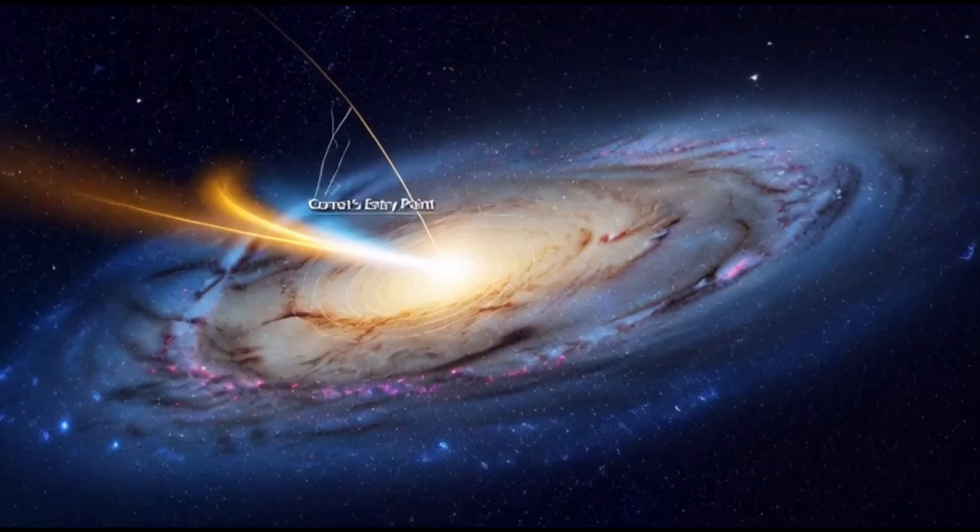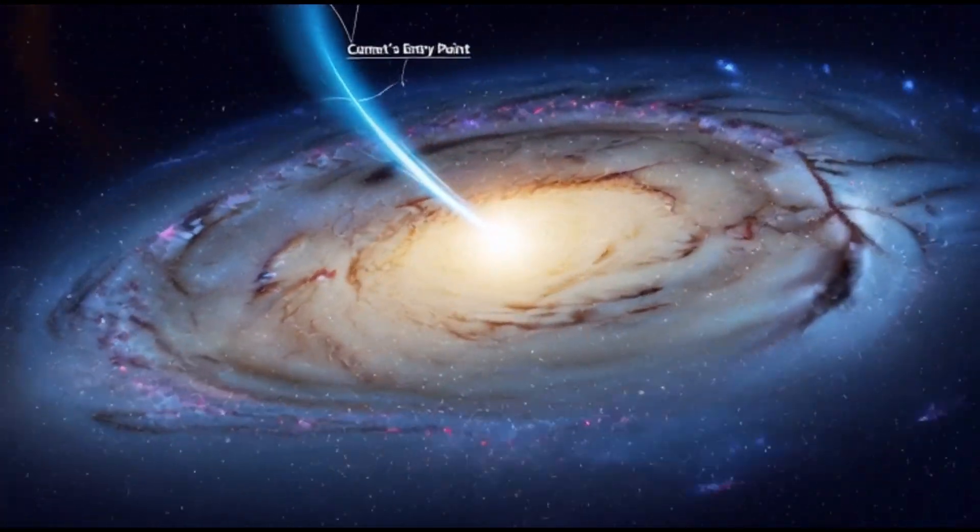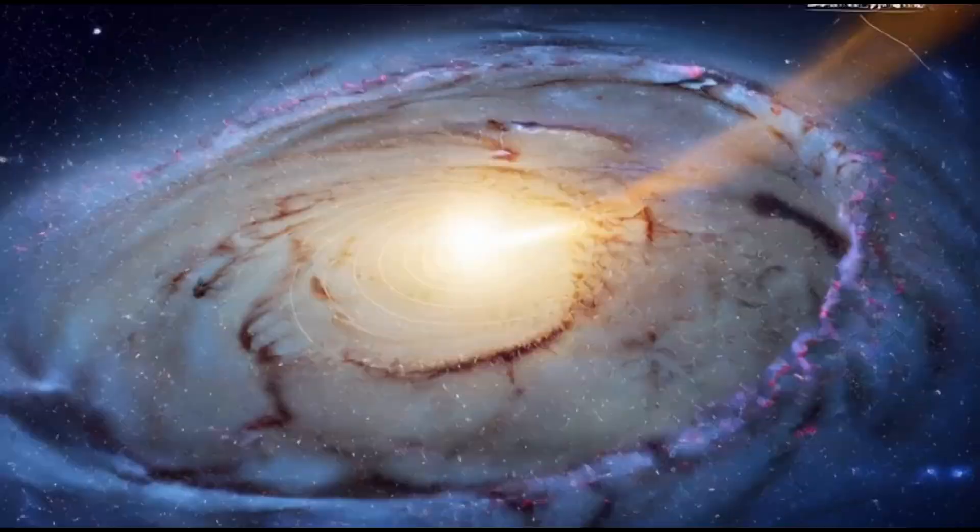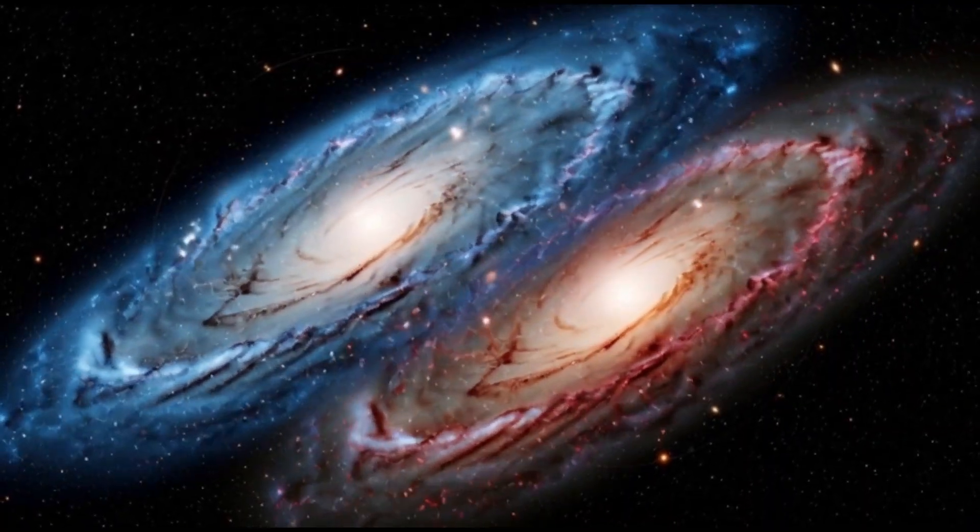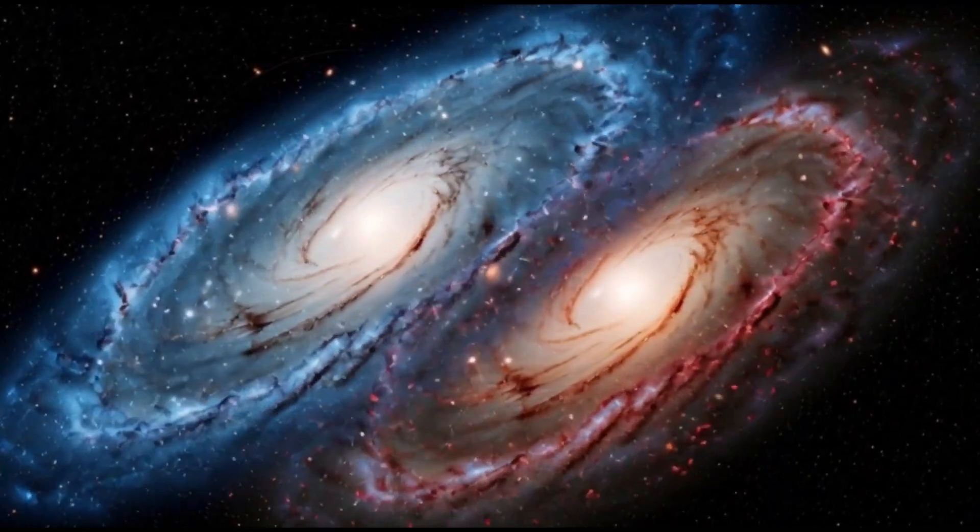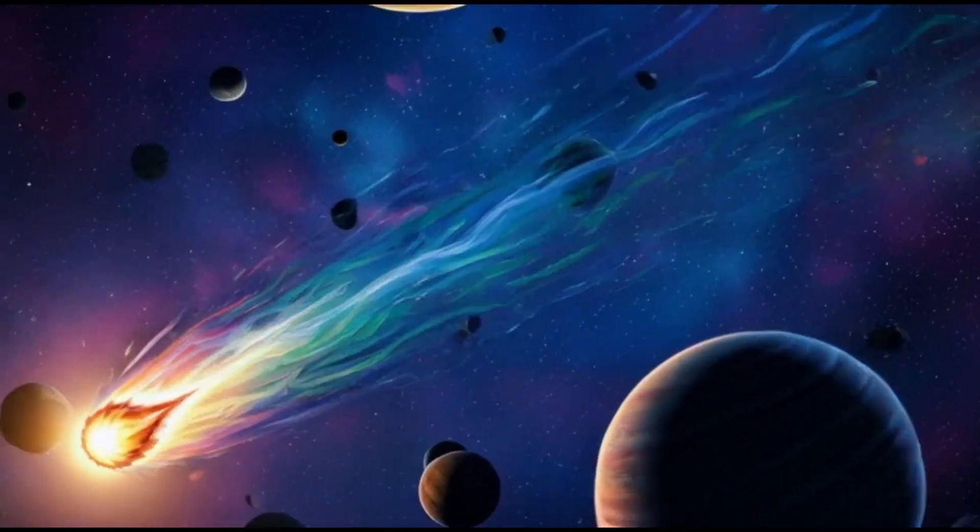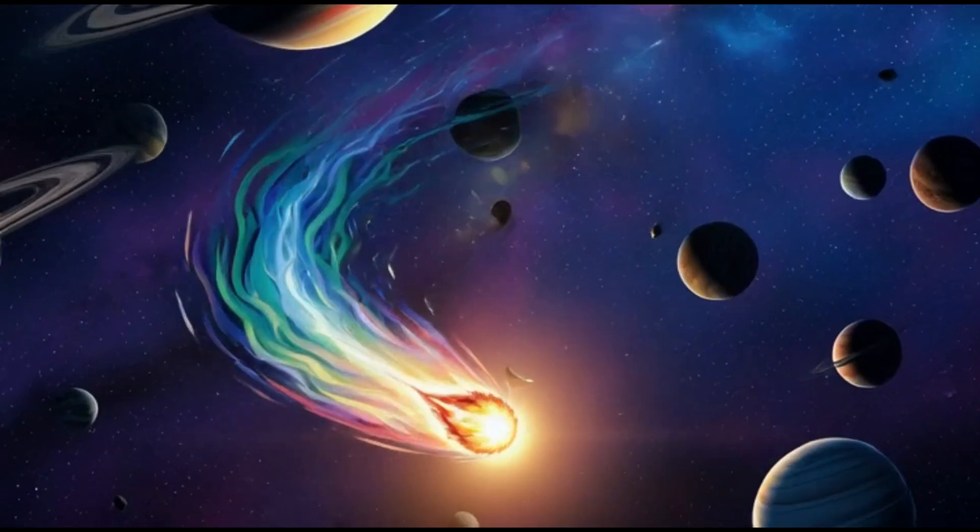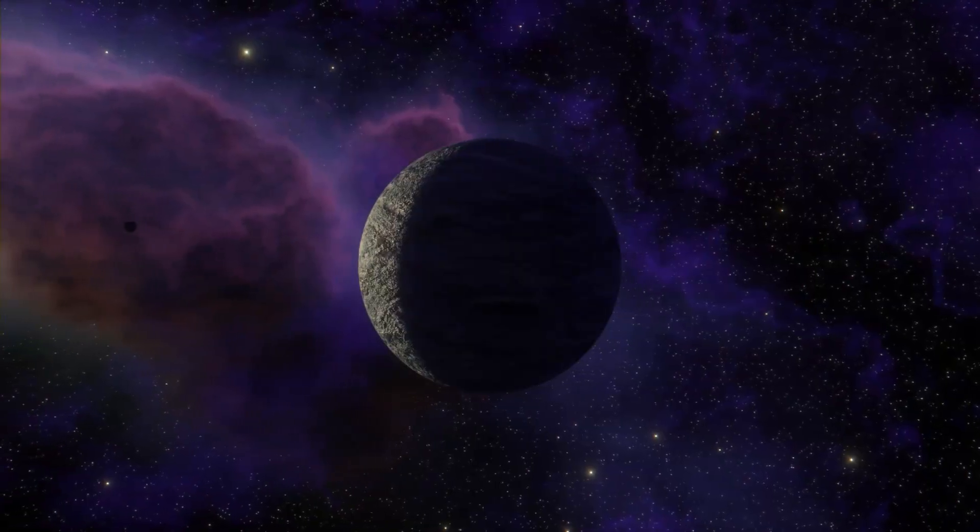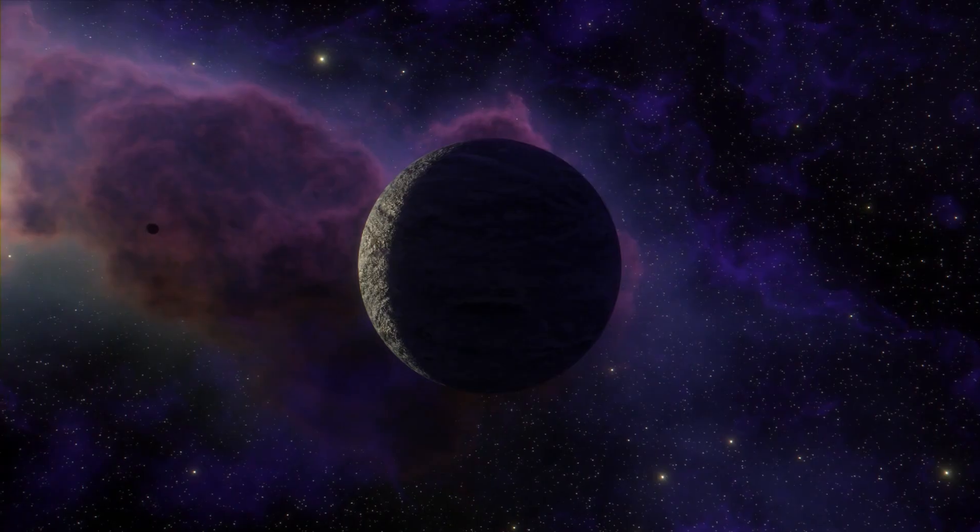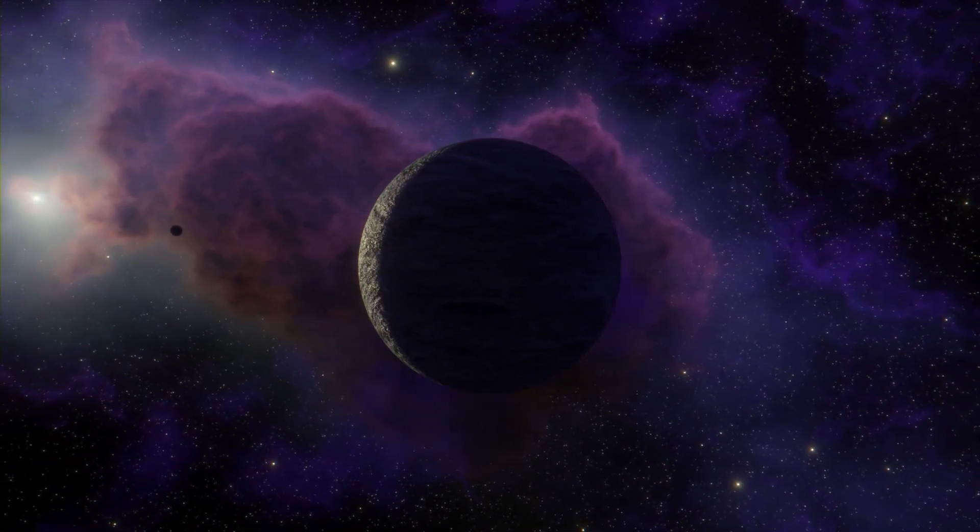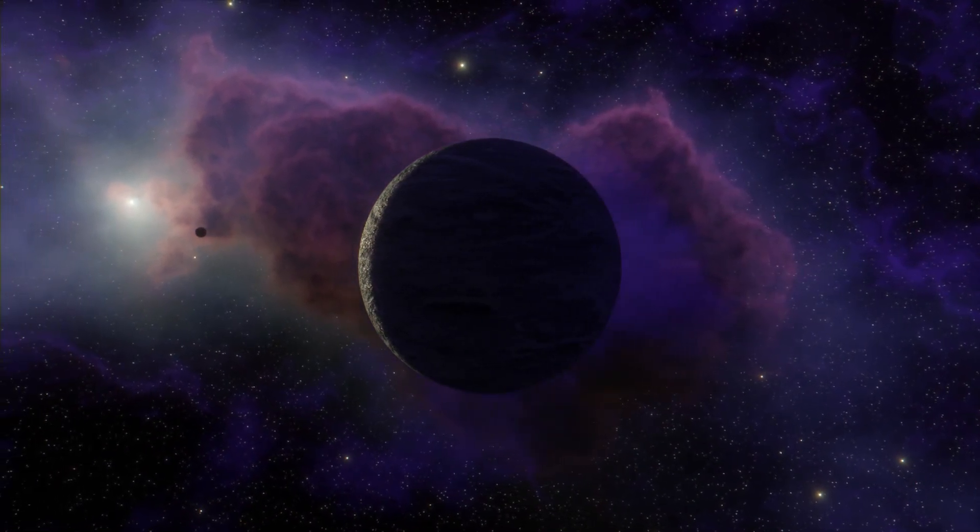Out of the countless directions it could have arrived from, it hit that narrow plane with just a three-degree tilt. That's like throwing a dart across light-years of space and landing it flush with a spinning record. When astronomers plotted its entry point, the line led straight toward the dense, ancient heart of the Milky Way, the galactic core. This region is older, busier, and far more chaotic than our quiet corner.